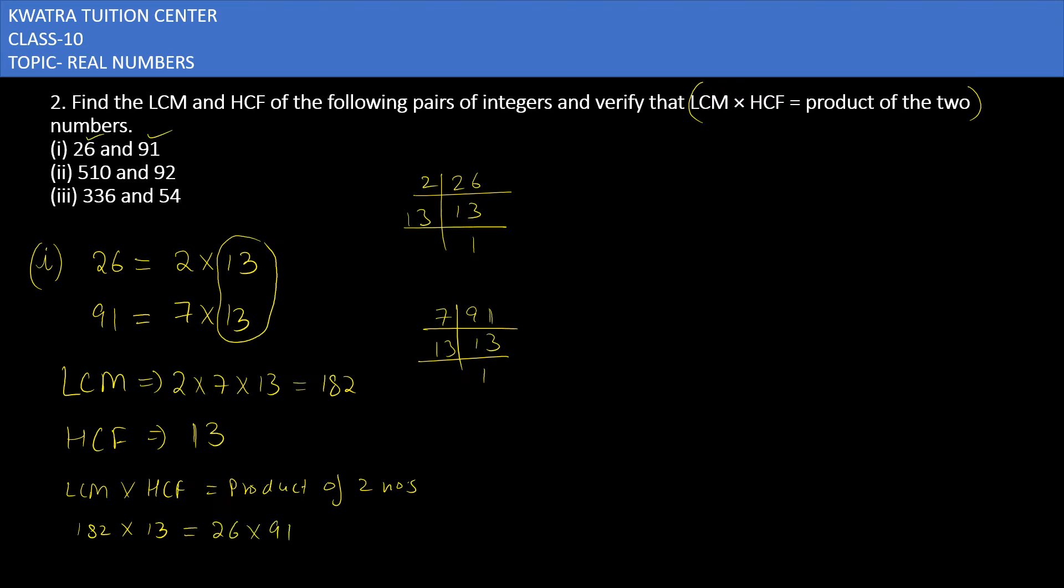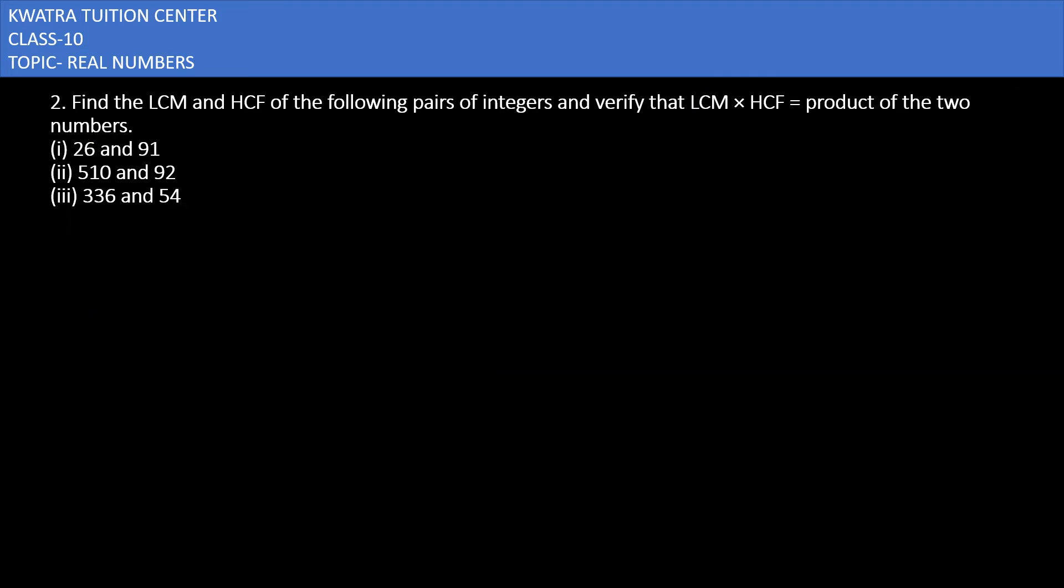Product of two numbers means you have to take these two numbers, 26 and 91. Multiply 182 with 13, you will get 2366, and on the other side as well you will get 2366. So this is your answer for the first one.